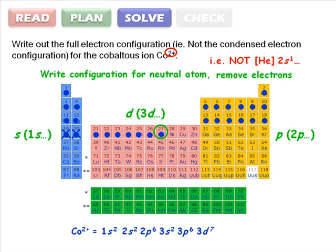Check that you haven't misread the question. For example, be sure you've chosen cobalt and not copper on the periodic table, and have written the full, not the condensed, electron configuration. If everything checks out, then you're finished.